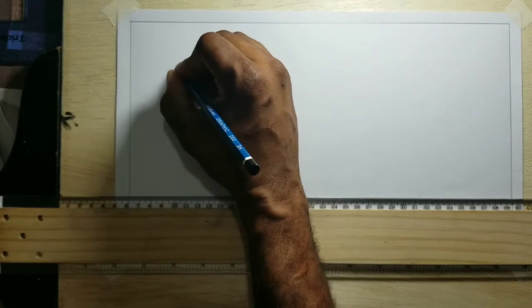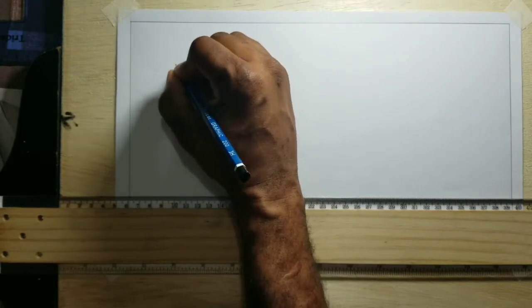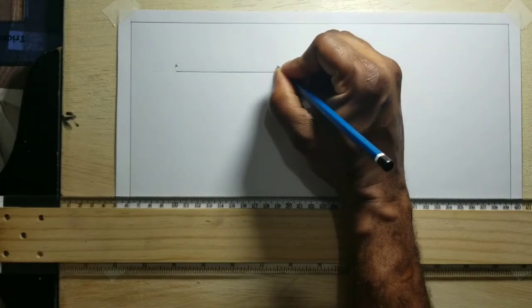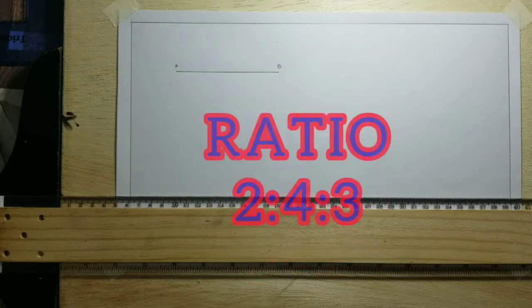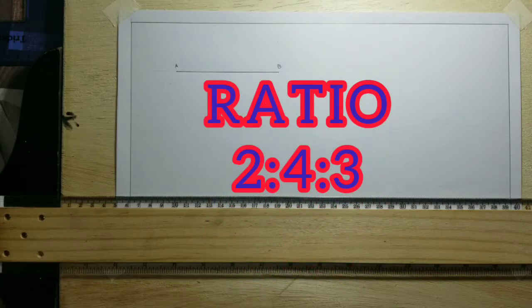I will now outline my 9 cm. The next step is that we will label our line AB. Now the length of the line AB is 9 cm and the ratio that we will be using is 2 to 4 to 3.